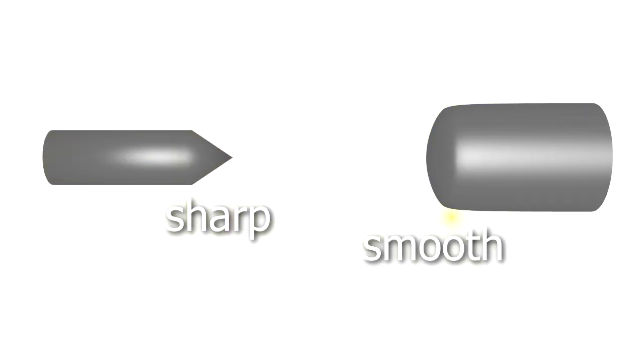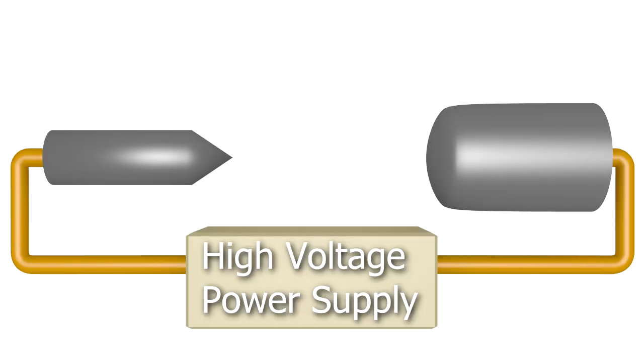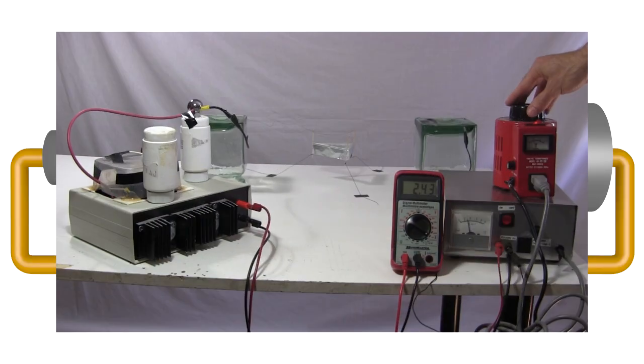The basic idea is that you put a sharp edged object near a smooth edged object. Both usually are electrically conductive materials. You then put a high voltage across them, like I do with my homemade high voltage power supply.